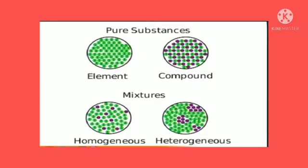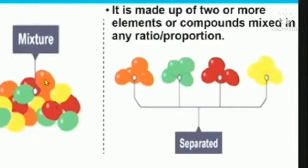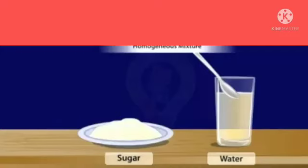Next, mixture. What is a mixture? When two or more substances are combined together physically, it forms a mixture. There are two types: homogeneous mixtures and heterogeneous mixtures. Mixtures are formed by mixing different substances. For example, orange, green, red, and yellow bubbles all mixed in a particular ratio form a mixture.